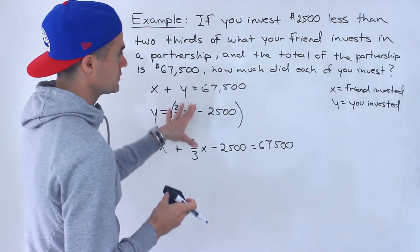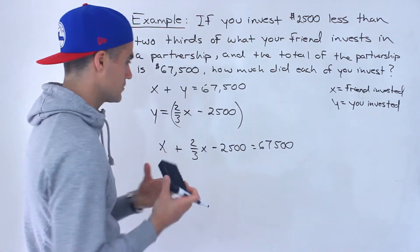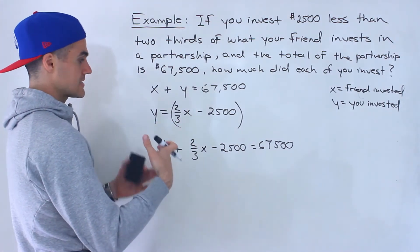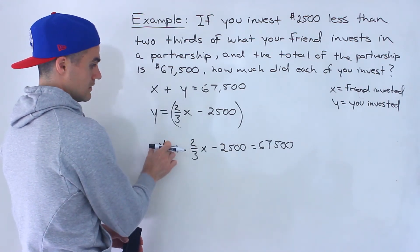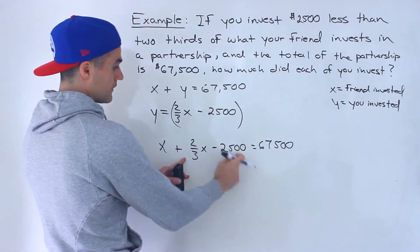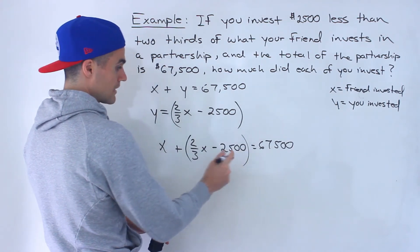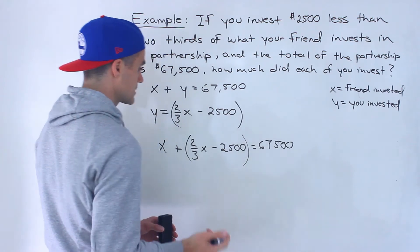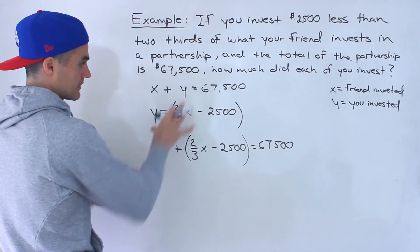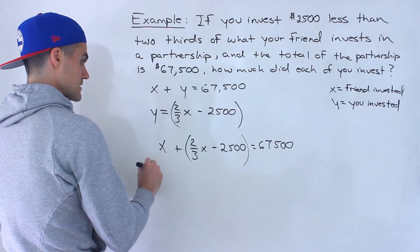Now you don't necessarily have to make two equations. Personally, I like to. You could have just let x equal the amount that your friend invested and then got the amount that you invested in terms of x and then just added them. And then the total has to be this. Personally, I like to make two equations though.